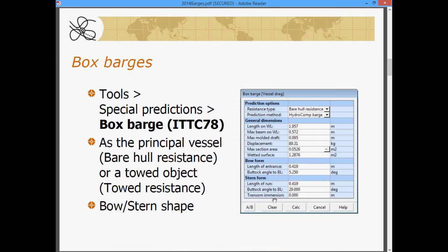Let's go through the pieces of the data on the box barge form. At the top, you'll see a resistance type. Now, this is where the resistance will be posted either to a bear hull resistance column or the towed resistance column.